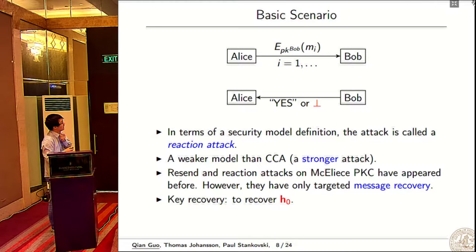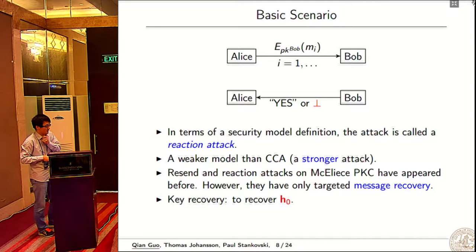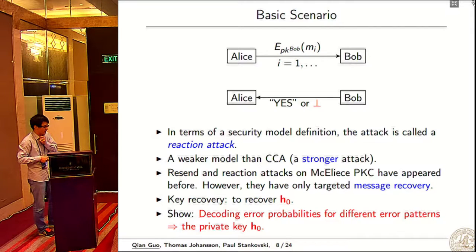Next is the new idea part. This is our attacking scenario. Alice will send many messages to Bob encrypted using Bob's public key, and Bob will decrypt and tell Alice whether the decryption is successful or not. In terms of the secure model, this is called a reaction attack, and this is a weaker model because Alice just needs to know whether decryption succeeds or not. She doesn't need the decryption information, so in this sense it's a stronger attack.